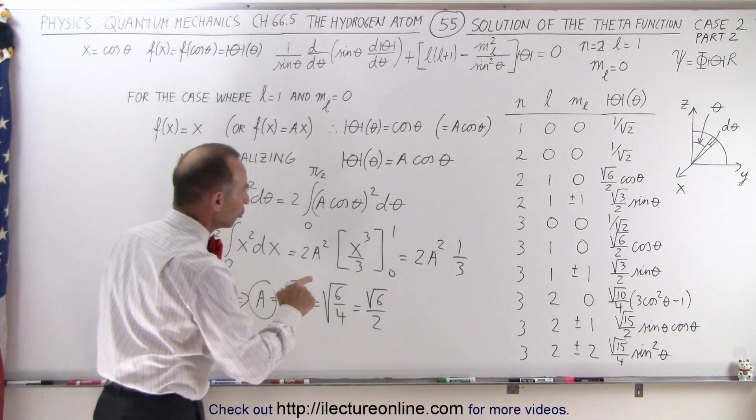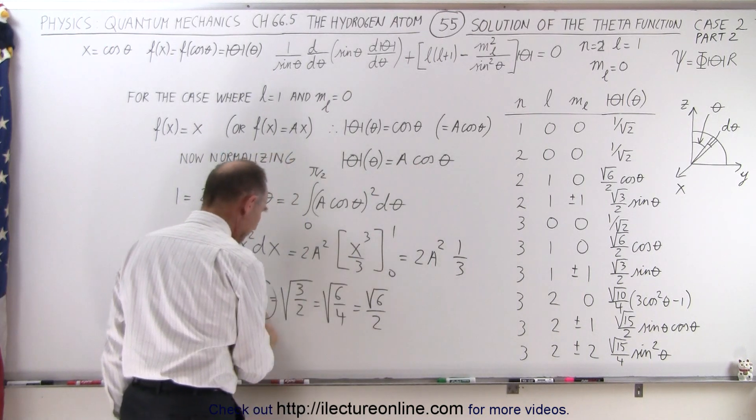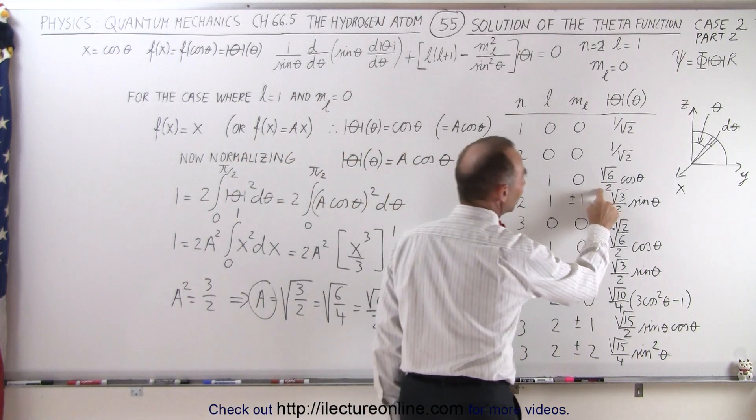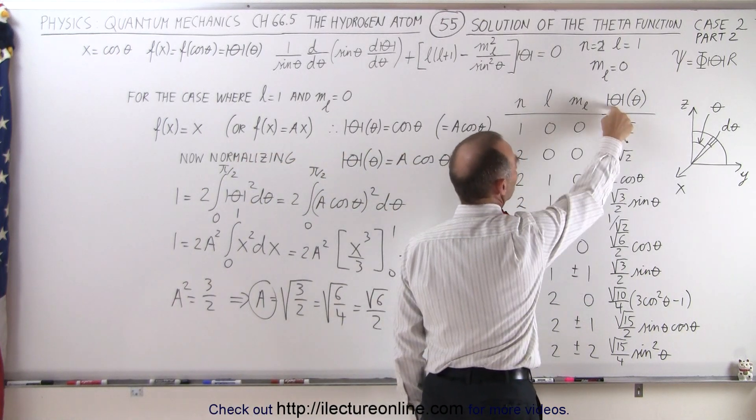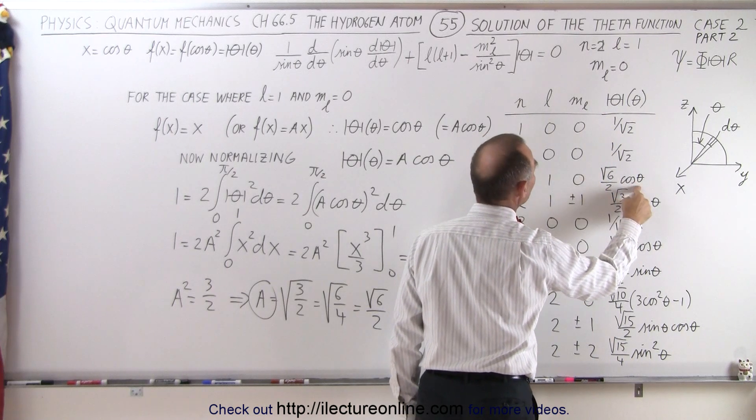Now we knew that the solution is going to be a times the cosine of theta, and a is equal to the square root of six over two, which means that, yes indeed, the solution to our function theta is going to be the square root of six over two times the cosine of theta.